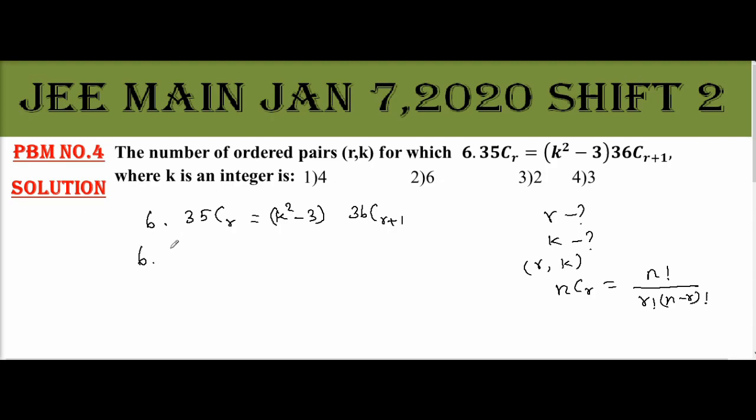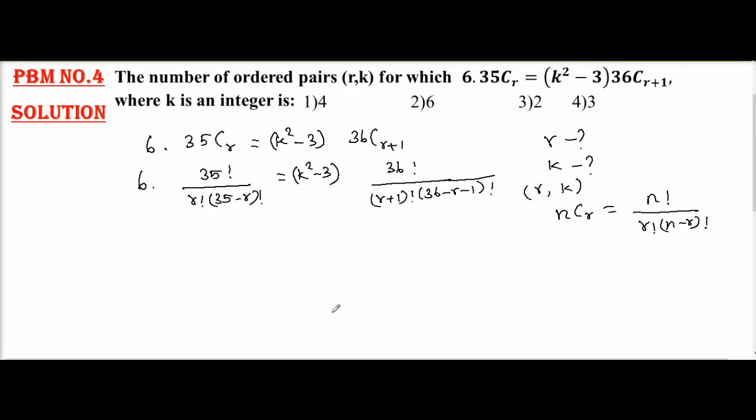So this will be 6 into 35Cr. So nCr formula is 35 factorial by r factorial into 35 minus r factorial. Equal k square minus 3 into 36 factorial by r plus 1 factorial into 36 minus r minus 1 factorial. Now this is equal to k square minus 3.